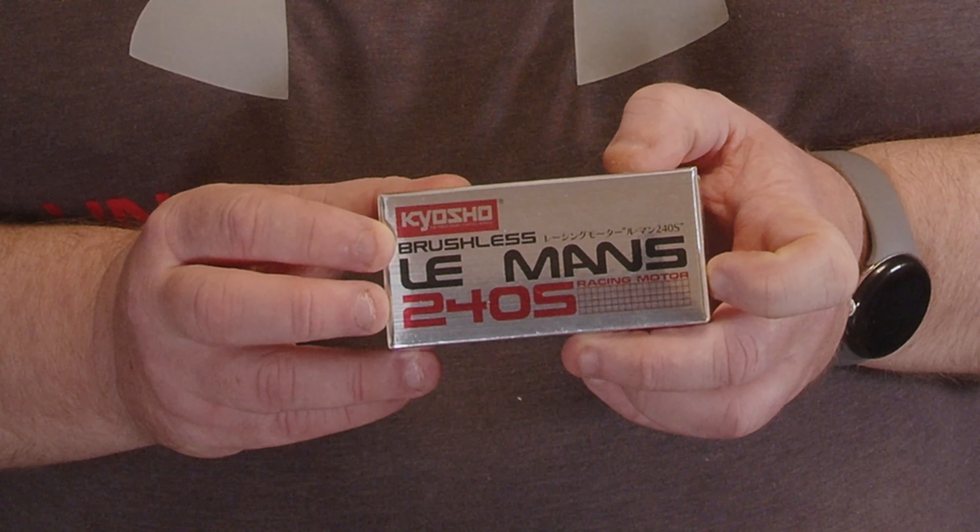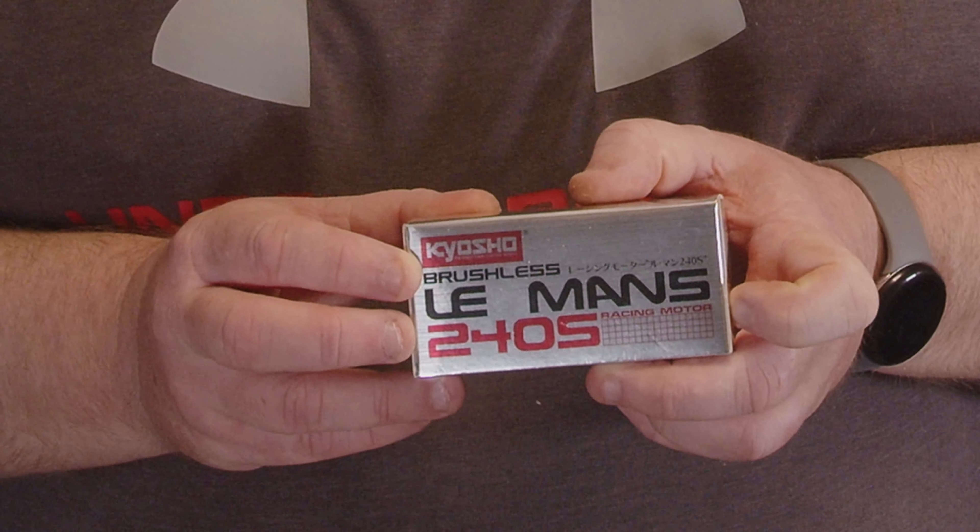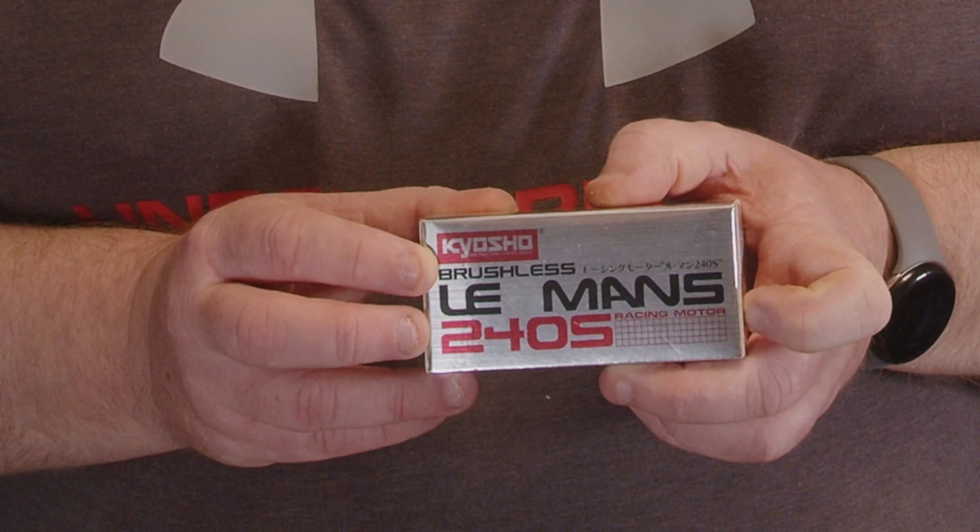We've got a few specs on this. I believe there's two different motors for this: one geared more towards two-wheel drive, one geared more towards four-wheel drive. I believe this one is the 15.5 turn geared more towards four-wheel drive, and it says RPM at 7.4 volt is 18,870. So it's a 2550 kV motor.